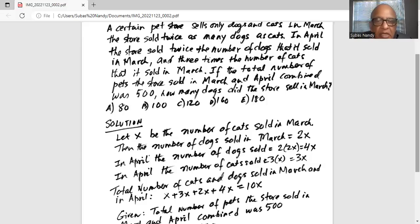In April the number of dogs sold is twice the number of dogs sold in March, so it is two multiplied by 2x is 4x. And in April the number of cats sold is three times the number of cats sold in March, so it is 3x.